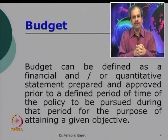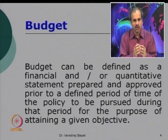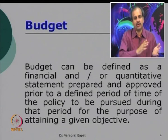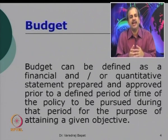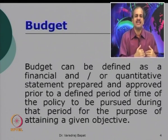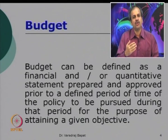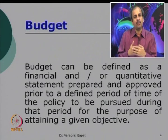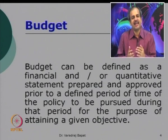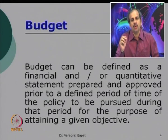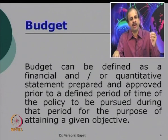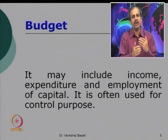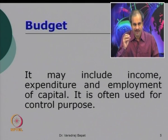You will have some objective in mind, and to achieve that objective you set your budget. For example, if your objective is to provide for higher education, you must ensure sufficient savings over 4-5 years. If petrol prices are going up, your transport cost will increase, so you need to make more provision for it, either by minimizing other expenses or increasing income. There are a variety of budgets — budget may include income, expenditure, and employment of capital.